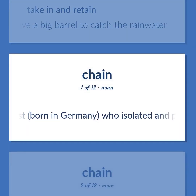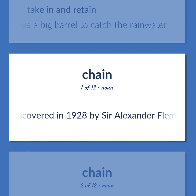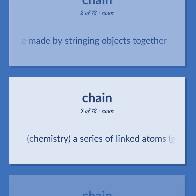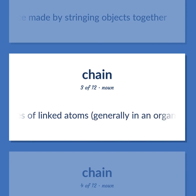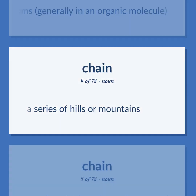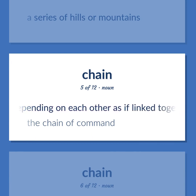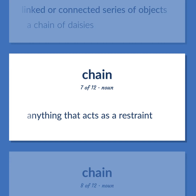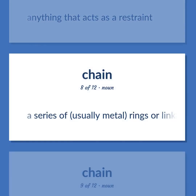Chain: British biochemist born in Germany who isolated and purified penicillin, which had been discovered in 1928 by Sir Alexander Fleming, 1906–1979. A necklace made by stringing objects together. Chemistry — a series of linked atoms, generally in an organic molecule. A series of hills or mountains. A series of things depending on each other, as if linked together — the chain of command. A linked or connected series of objects — a chain of daisies. Anything that acts as a restraint. A series of, usually metal, rings or links fitted into one another to make a flexible ligament.